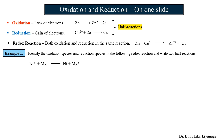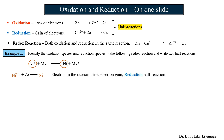First, Ni²⁺ — on the reactant side it is Ni²⁺, and on the product side it becomes neutral nickel. Ni²⁺ becomes neutral nickel by gaining two electrons. Electron gain is called reduction, so this is the reduction half reaction.